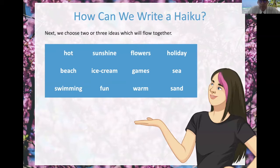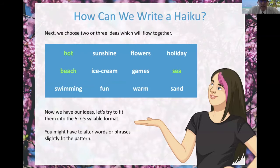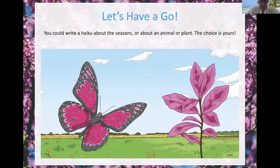What are we going to do? Hot, beach, sea. Now go to the 5-7-5 syllable format. You can choose what you want to write about — it's up to you. But usually it's a season, an animal, or a plant. Off you go.